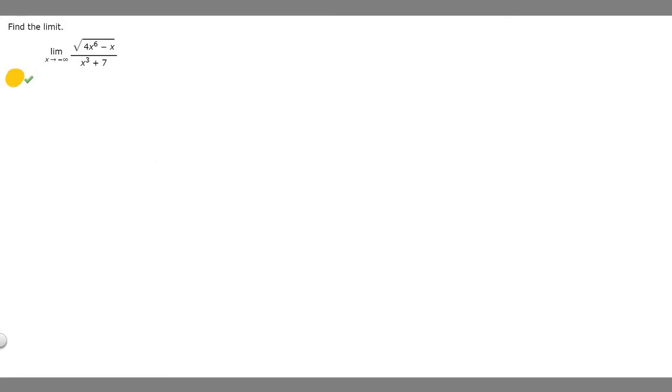In this problem we're told to find the limit as x approaches negative infinity of the square root of 4x to the 6th minus x over x cubed plus 7.